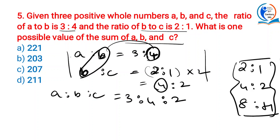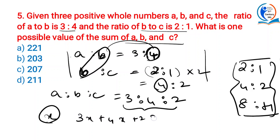So A:B:C = 3:4:2. The sum A + B + C = 3x + 4x + 2x = 9x, meaning the sum is a multiple of 9. Which of the options is divisible by 9? It is 207, because the sum of its digits is divisible by 9. So C is the answer. This combines ratio-proportion with the divisibility test rule.